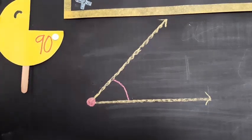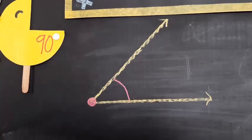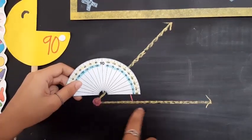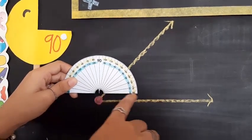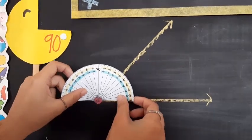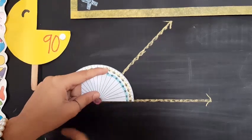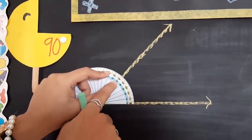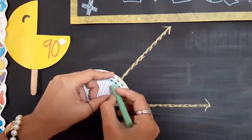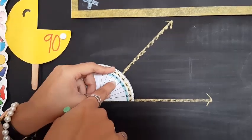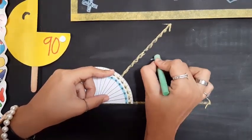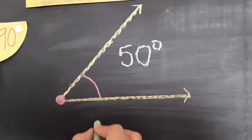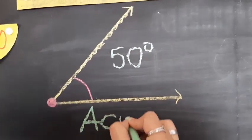Alright, this is my first example. Remember that you need to place the vertex right here at the center point of the protractor, and the bottom line of the angle has to match the edge of the protractor. So I place the protractor here and I see how many degrees are marked. As you can see, this angle measures 50 degrees, which means this is an acute angle.